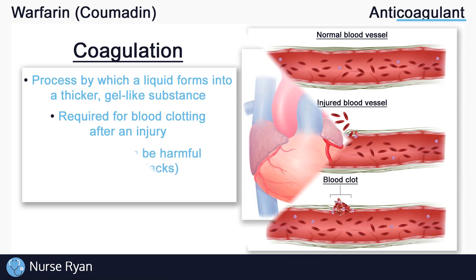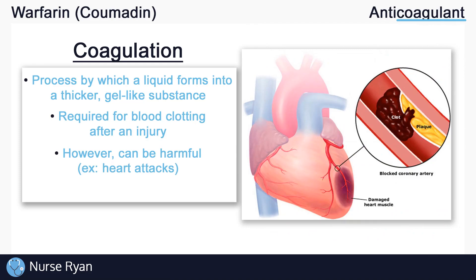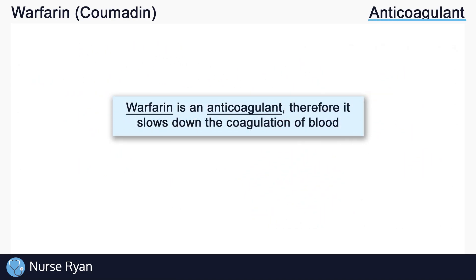However, there are some cases in which blood clotting can be harmful to the body — for example, with heart attacks. And in those cases we may require an anticoagulant like warfarin to help reduce the amount of blood clotting. So again, warfarin is an anticoagulant, so it slows down the coagulation of blood.